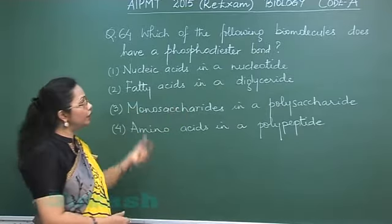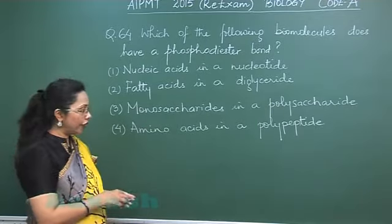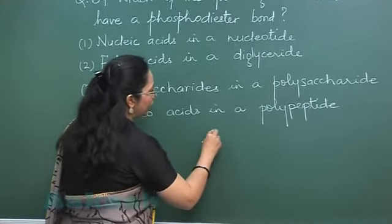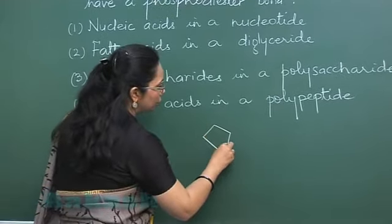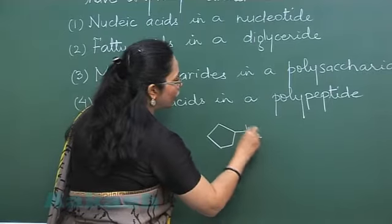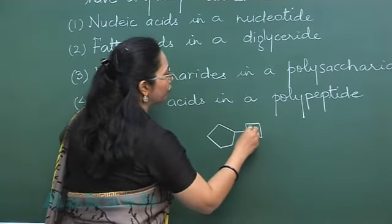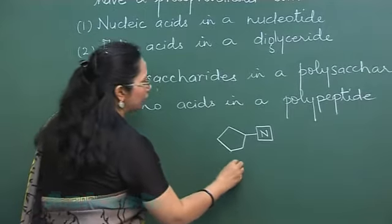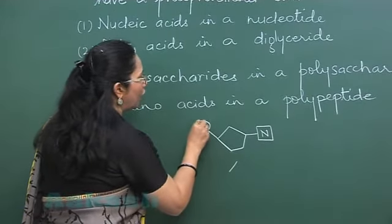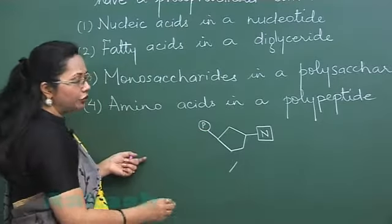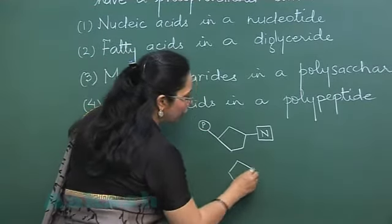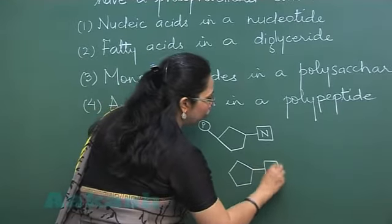In a nucleotide, the nucleotides are linked by the phosphodiester bond. A nucleotide has a pentose sugar, which is bound to a nitrogenous base, and on the other end attached to a phosphoric acid. Similarly, the next nucleotide is also attached to a nitrogenous base.